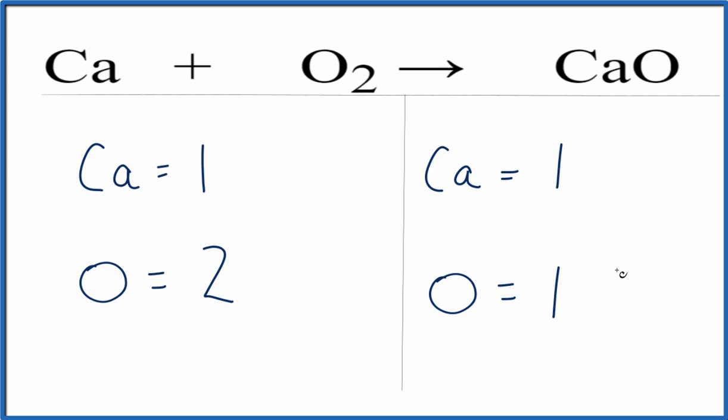Looks like the easiest thing to do is to get two oxygens here by putting a coefficient in front of this CaO, calcium oxide. Now we have the one times the two, that gives us two oxygen atoms, but the one times the two here, that gives us two calcium atoms.